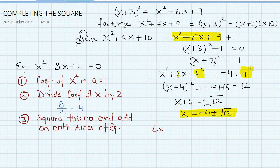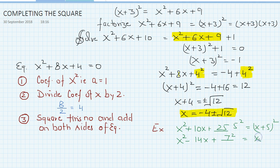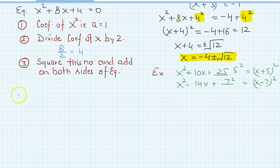Let's take some examples to check what number we add. Suppose my expression is x²+10x+?. The number to add is: half of 10 is 5, square of 5 is 25, so you add 25 (or write 5²), giving (x+5)². Similarly for x²−14x+?: half of 14 is 7, so you add 7², giving (x−7)². This number is always positive, irrespective of the sign of the x-coefficient.